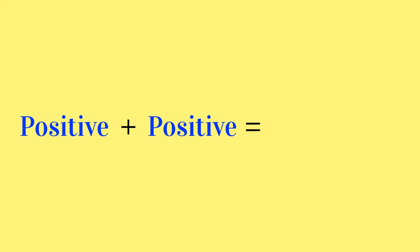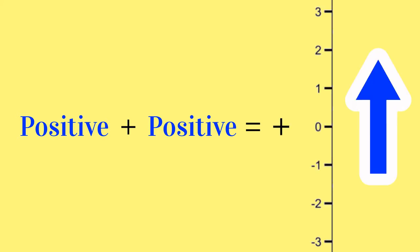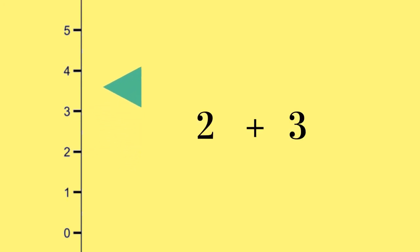We all know that to add two positive numbers together, you count upwards on the number scale to find the answer of a larger number. For example, 2 plus 3 equals 5.